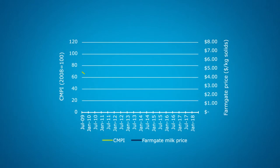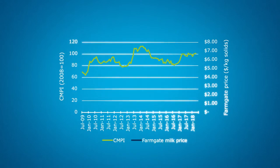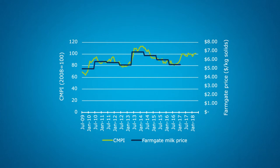For instance, if the index is at 100 and export prices increase 5%, then the index will increase to 105. Farmers can use the index to get a feel for current and future trends, because export dairy prices influence Australian farmgate prices.